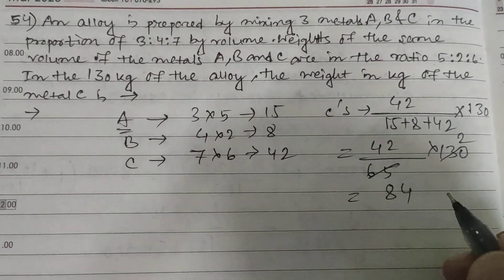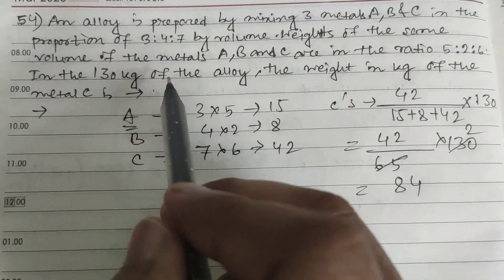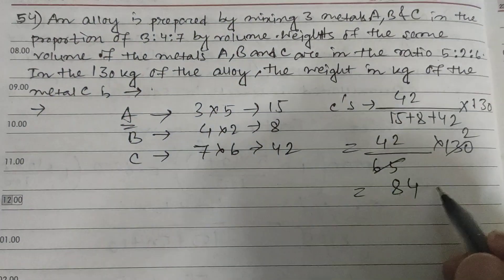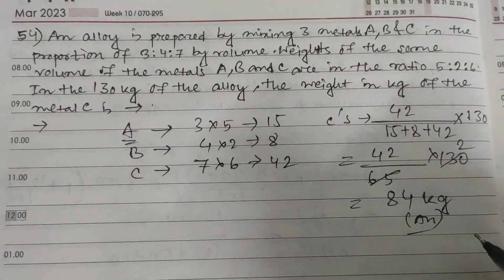So in the 130 kg of the alloy, the weight in kg of the metal C is 84 kg. This is your answer.